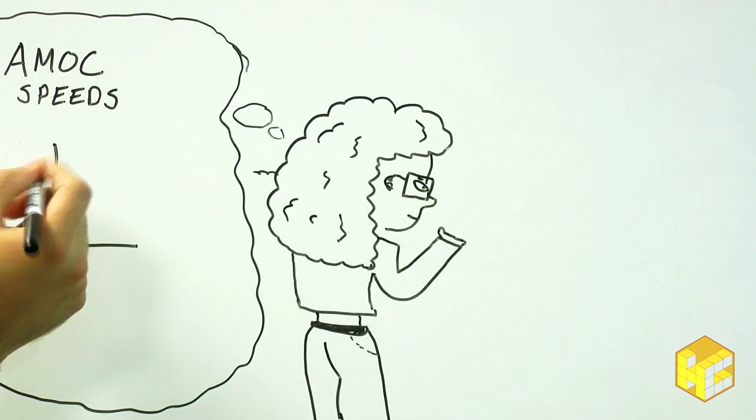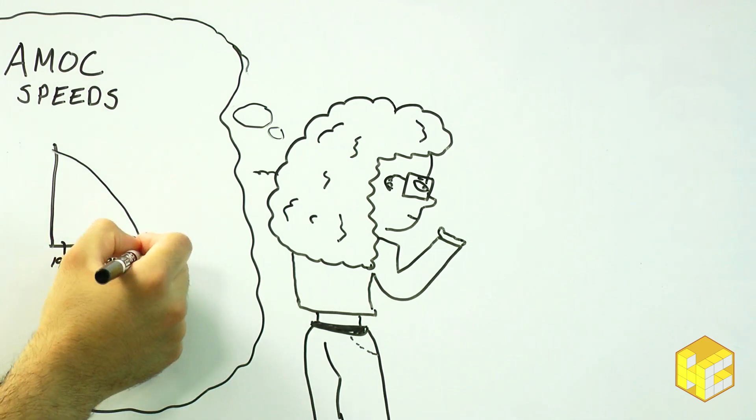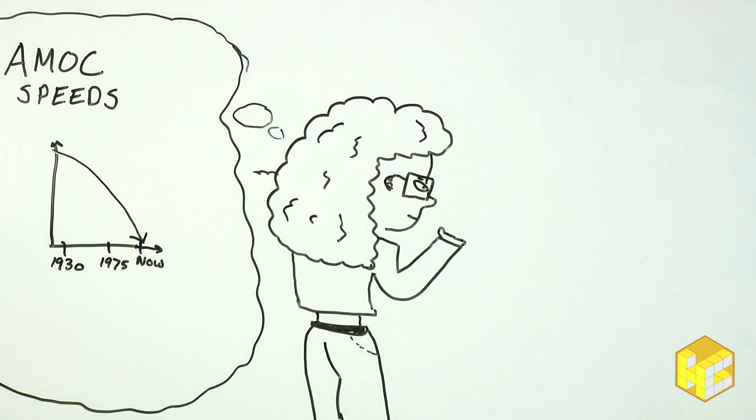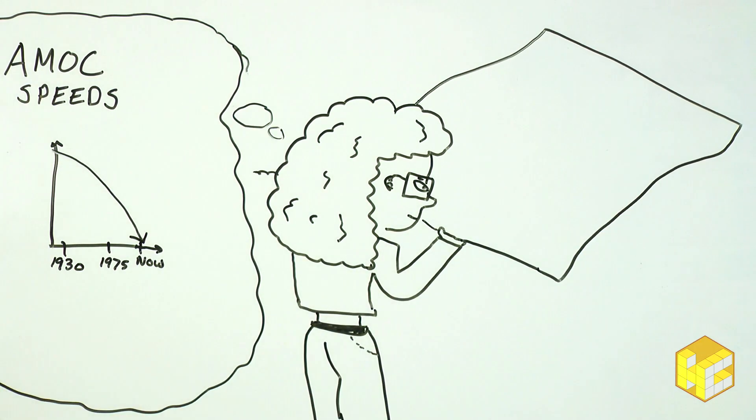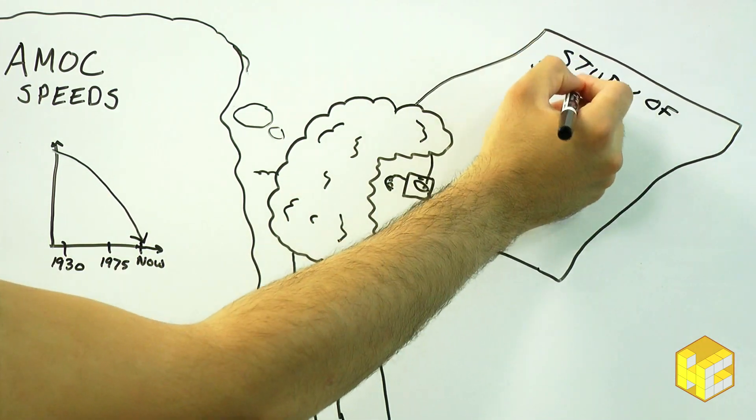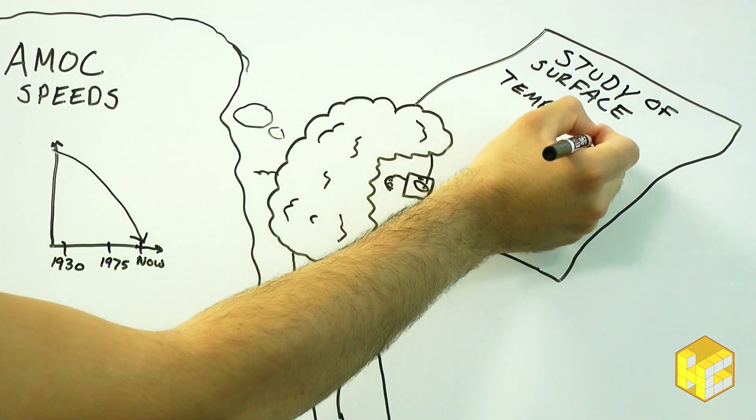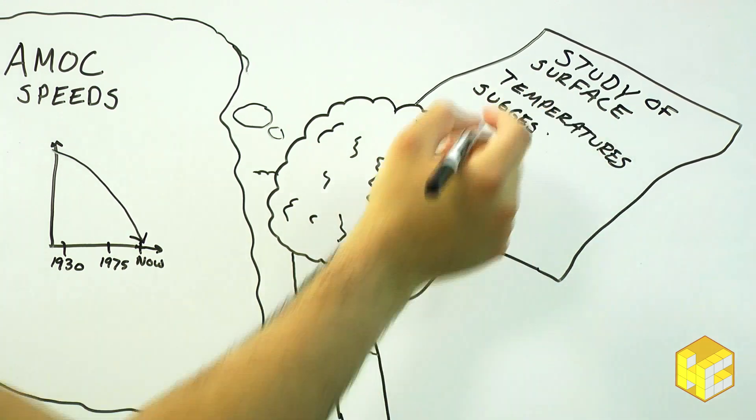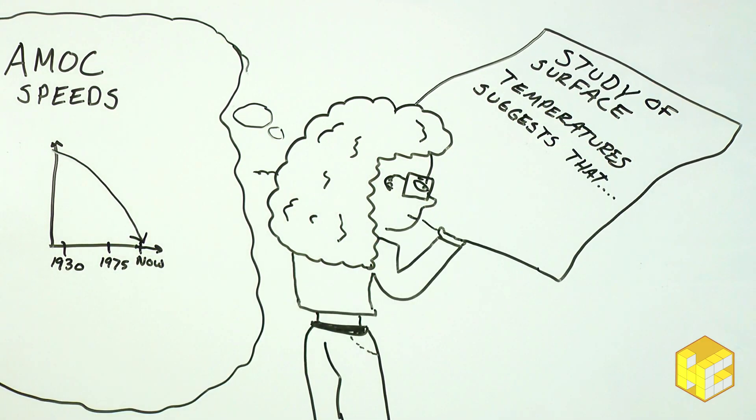Of course, without hard evidence, we can't be certain, and some research says that the AMOC oscillates in speed about every decade, and we need another decade of observations to determine whether or not the current slowdown is part of the natural variance.